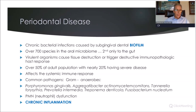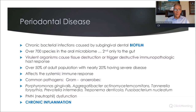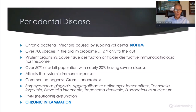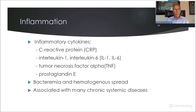We all know periodontal disease is a chronic bacterial infection caused by subgingival dental biofilm — over 700 species in the oral microbiome, second only to the digestive tract. The virulent organisms, particularly the red complex pathogens, cause tissue destruction and trigger a destructive immunopathologic host response. It's a significant problem: over 50 percent of the adult population have periodontal disease, and nearly 20 percent have severe disease. It does affect the systemic immune response, and we know it leads to PMN dysfunction and is a chronic inflammatory state.